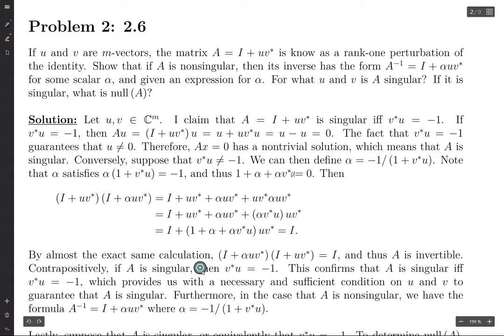By almost the exact same calculation, you do I plus alpha U V star times I plus U V star. Basically, the terms are in slightly a different order, and the final term here, you get alpha times U V star times U V star, which actually becomes even easier to reduce. It's pretty much the same thing, you get I. And therefore, A is invertible, meaning that A is non-singular.